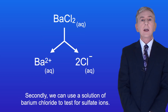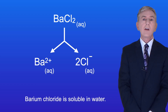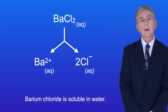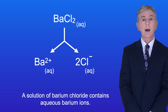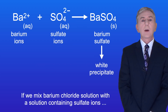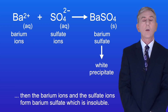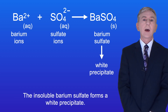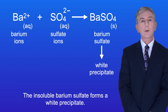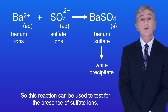Secondly, we can use a solution of barium chloride to test for sulfate ions. Barium chloride is soluble in water, so a solution of barium chloride contains aqueous barium ions. If we mix barium chloride solution with a solution containing sulfate ions, then the barium ions and the sulfate ions form barium sulfate, which is insoluble. The insoluble barium sulfate forms a white precipitate, so this reaction can be used to test for the presence of sulfate ions.